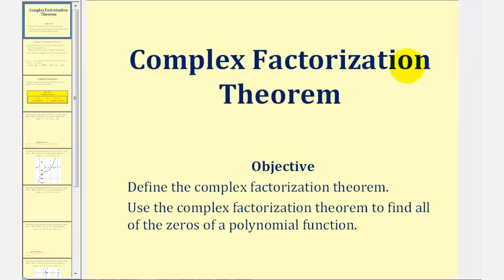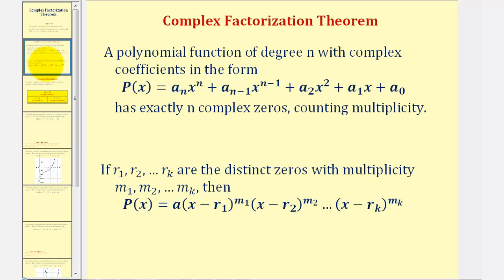Welcome to a lesson on the complex factorization theorem. In this lesson, we'll define the theorem and then use the theorem to find all the zeros of a polynomial function. A polynomial function of degree n with complex coefficients has exactly n complex zeros, as long as we count multiplicity.